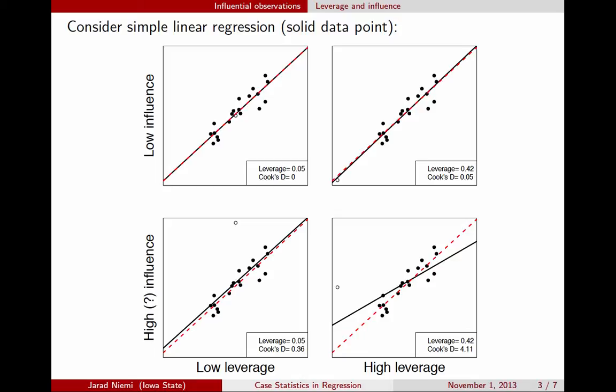This illustration is for simple linear regression. It's harder to make illustrations for multiple regression because there are more dimensions, but the same idea holds. For multiple regression, leverage tells you how far the explanatory variable values for an observation are from the rest, and Cook's D tells you how much impact removing that observation has on all the estimated regression coefficients.